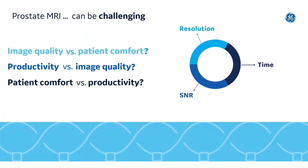We all know prostate MRI can be challenging. SNR and high resolution are crucial but it comes at the expense of prolonged exam or patient comfort, especially if an endorectal coil is utilized. Today prostate MRI is a delicate balancing act between image quality, productivity, and patient comfort.